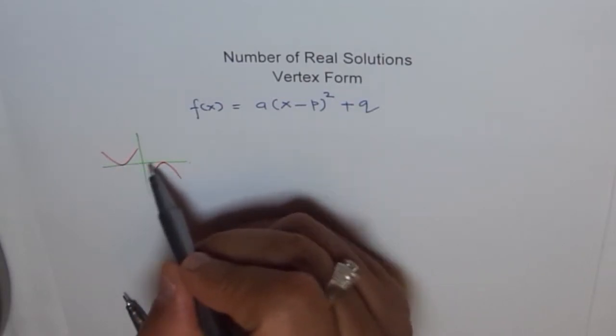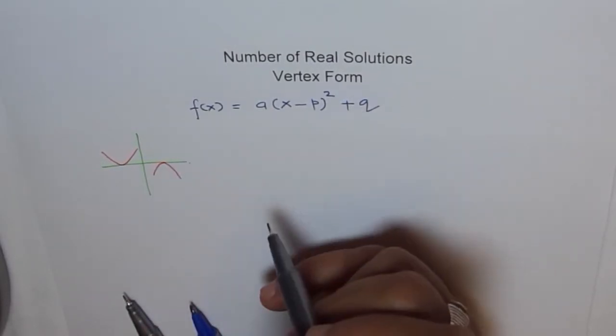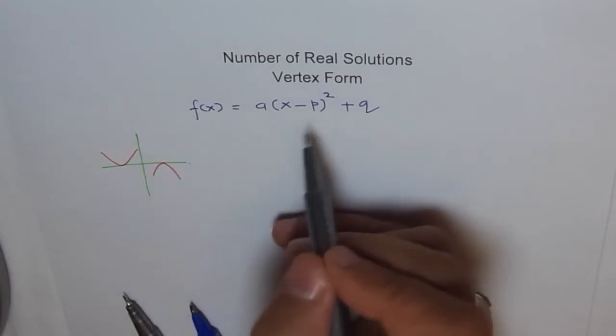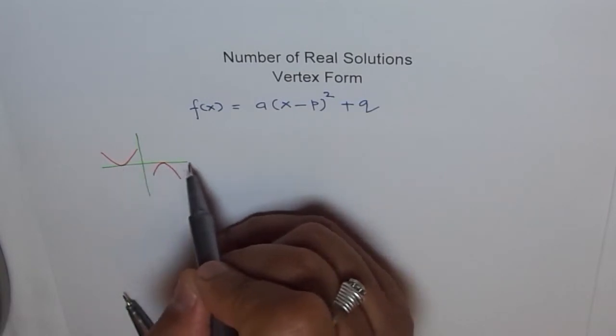If the vertex is on the x-axis, that means what should be the value of q? q should be zero because it's not translating up or down. p could be anything because you can translate left and right. And a could be either positive, if it is positive it will open up, or negative.